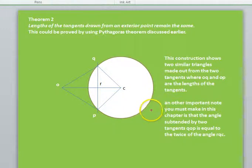Another important note you must make in this chapter is that the angle subtended by the two tangents is equal to twice the angle of R, Q, C. R, Q, C.